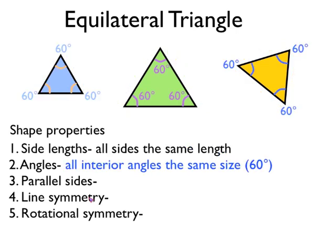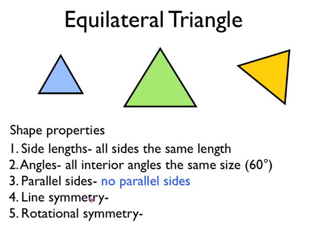If we look at the angles — the interior angles in the triangles, that's the angles that are inside the shape — they are all the same size and they're always 60 degrees. So in an equilateral triangle, all the interior angles are the same size and they're always 60 degrees. There are no parallel sides in an equilateral triangle, none at all.